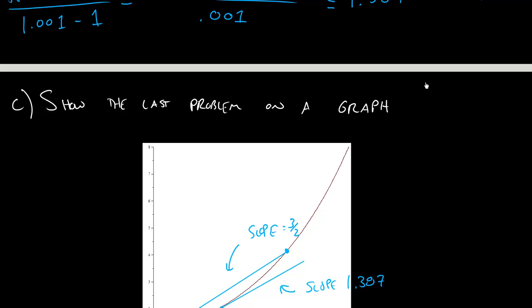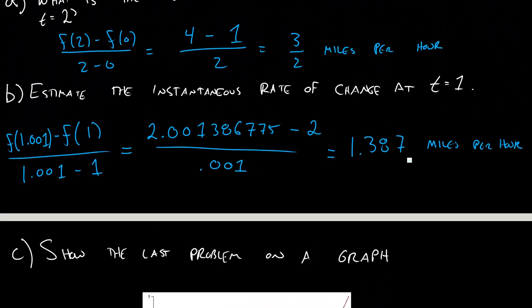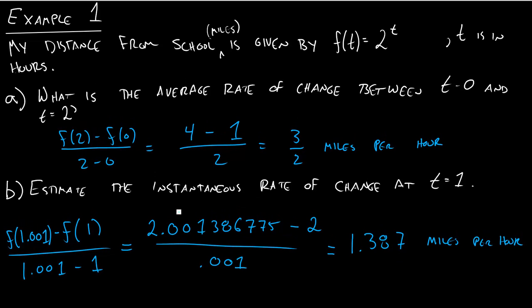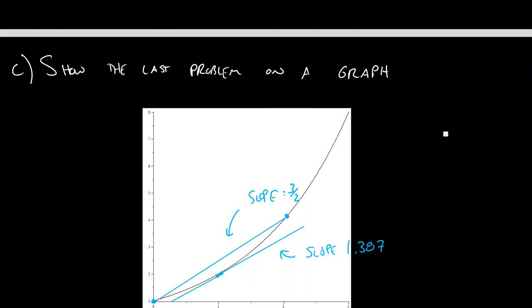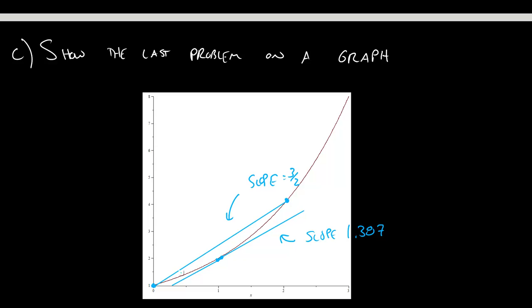So we're getting into some pretty tough stuff here, but what I want you to focus on is if they ask you for the instantaneous rate of change, what we're really doing is it's like average rate of change, but it's from two points that are much closer together. So we see that here in the formula. We're just using two points that are really, really close together. And we see that here, instead of drawing, for average rate of change, we just draw our line between two points, but for instantaneous rate of change, we want to just pick two points that are so close together that we end up getting this tangent line thing.